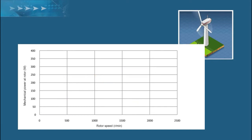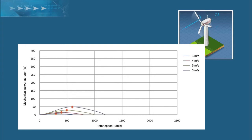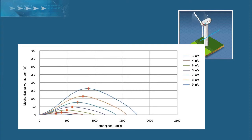When the speed of the wind changes, the zero torque point changes, as does the entire power curve. More wind means more power at a higher blade speed.